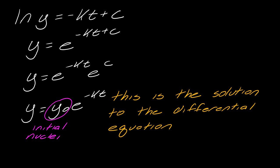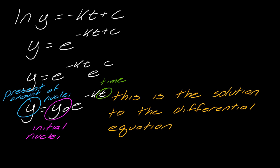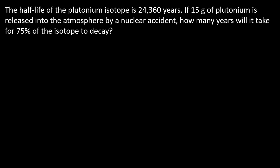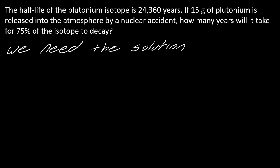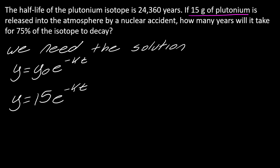So this y-naught actually stands for the initial amount of nuclei, or whatever your initial mass is — the initial amount present. T stands for time, and y stands for how much mass or nuclei are left after some amount of time. Now into this example: the half-life of the plutonium isotope is 24,360 years. If 15 grams of plutonium is released into the atmosphere by a nuclear accident, how many years will it take for 75% of the isotope to decay? We're going to use this solution that we just found. The 15 grams of plutonium is the initial quantity, so I can plug that right into my model.